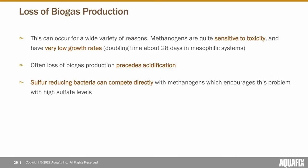There are a number of reasons for loss of biogas production. Methanogens are quite sensitive to toxicity — their population is much less diverse than acid-forming bacteria, which means they can't survive as wide a range of conditions. All the steps you take to maintain a stable anaerobic digester are to encourage as many methanogens to grow as possible. Methanogens have a very low growth rate — some have a doubling time of about 10 days, others as long as 28 days in a mesophilic system. To have a really optimally functioning digester, you might need over 28 days of stable conditions to get a diverse methanogen population.